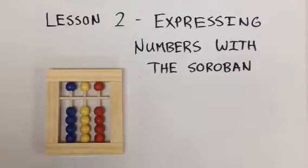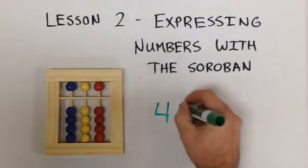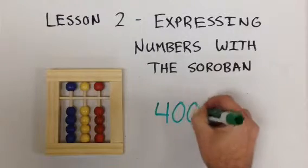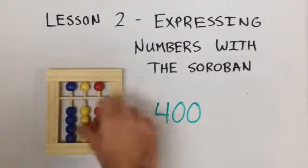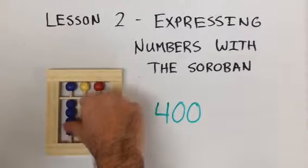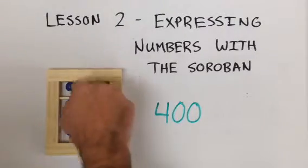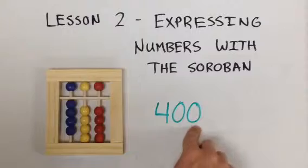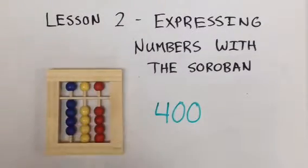Let's now move to the blue column. How would we express the number 400? Start in the 100s column and move up four blue beads. Zero in the 10s column, zero in the red column. This is the number 400.